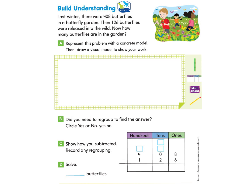On page 412, we'll begin under Build Understanding. Last winter, there were 408 butterflies in a butterfly garden. Then, 126 butterflies were released into the wild — they were let go. Now, how many butterflies are in the garden? Part A asks us to represent this problem with a concrete model, then draw a visual model to show your work. You can use blocks to show a concrete model, and then follow along with me to draw the visual model.